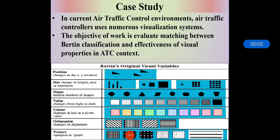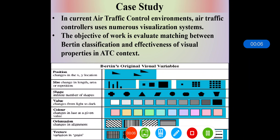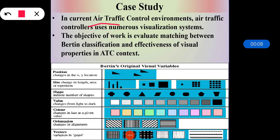In this section we will see the case study. In ATC, that is nothing but the air traffic control environment, air traffic controllers use numerous visualization systems like radar views, timelines, electronic strips, meteorological views, or supervision systems. Each of these visualizations are rich and dynamic because they display numerous visual entities that move and evolve over time.